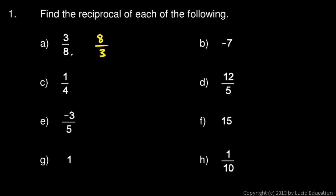For b, negative 7. The reciprocal of a number is just 1 over that number, so the reciprocal would be 1 over negative 7.